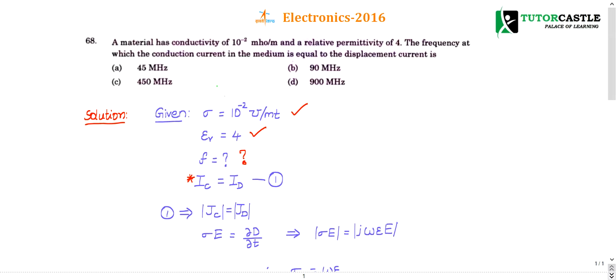Now, if conduction current and displacement current are equal, just divide both the currents with area. Current by area will give current density. So from this you can relate. This is the given information from this.